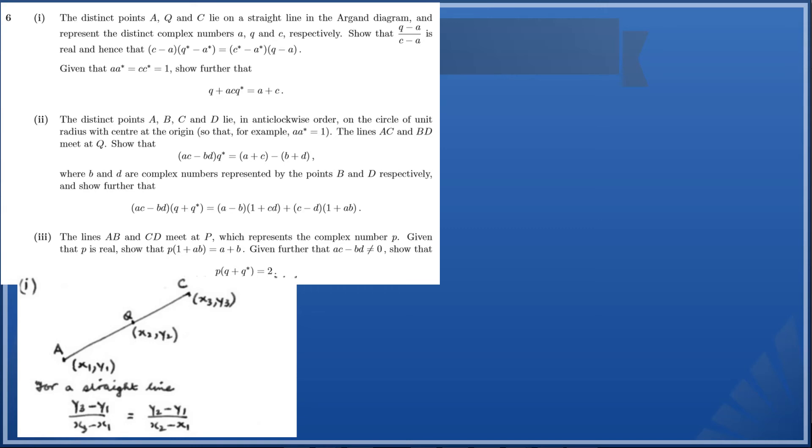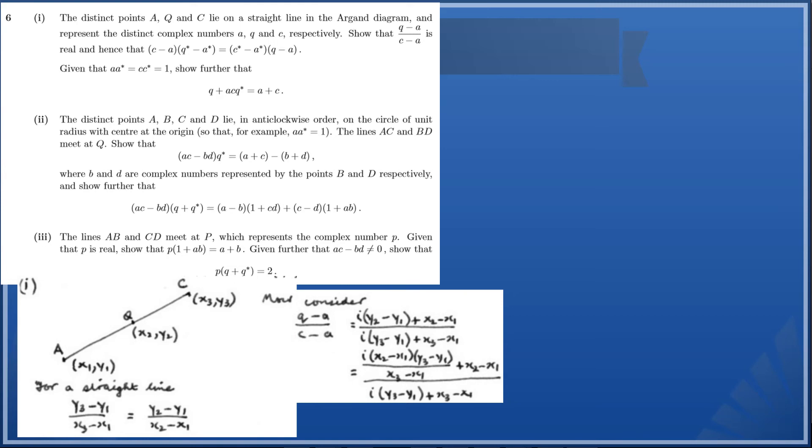Now what we need to do is consider (q-a)/(c-a) and we need to show that this is real. Let's write down these coordinates and we can take the imaginary part and the real part. By the natural properties of complex numbers, we can take a factor out and we can see now that we will have some cancellations. When working through this algebraic manipulation, the (x₃-x₁) + i(y₃-y₁) terms will cancel out, leaving you with (x₂-x₁)/(x₃-x₁). The numerator and denominator are both real, therefore the expression must be real.